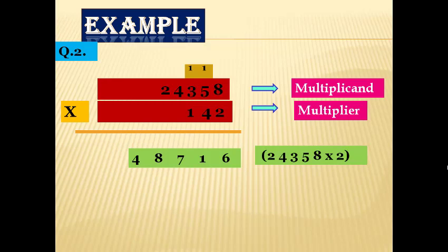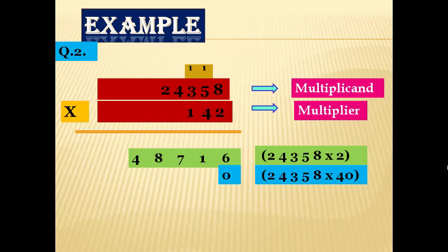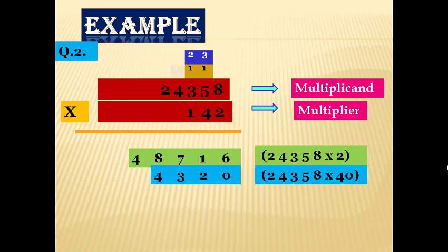Next we multiply 24,358 by 4 (tens place), i.e., 24,358 × 40: 4 × 8 = 32 — 2 placed, 3 carried; 4 × 5 = 20 + 3 carry = 23 — 3 placed, 2 carried; 4 × 3 = 12 + 2 carry = 14 — 4 placed, 1 carried; 4 × 4 = 16 + 1 carry = 17 — 7 placed, 1 carried; 4 × 2 = 8 + 1 carry = 9.